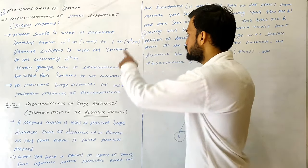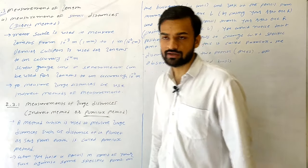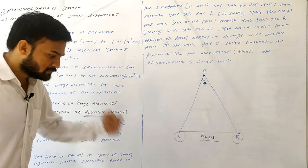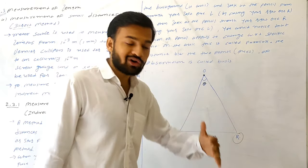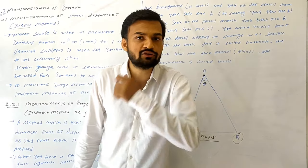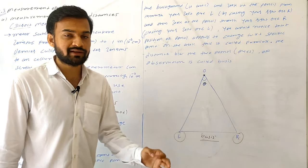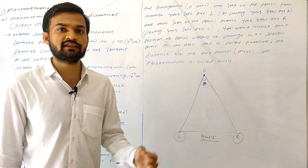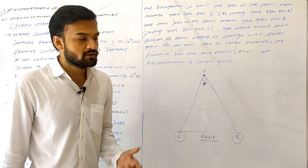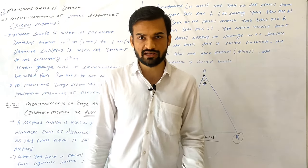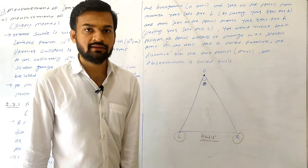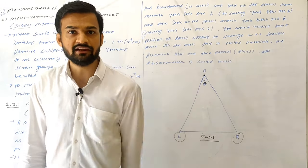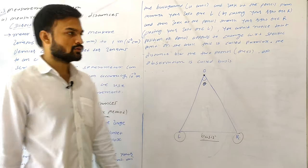Now suppose I need to measure a distance smaller than 1 mm, that is smaller than 10⁻³ meter — an even smaller distance accurately. For that we have an instrument: yes, we have Vernier calipers, which we will see in our physics laboratory.